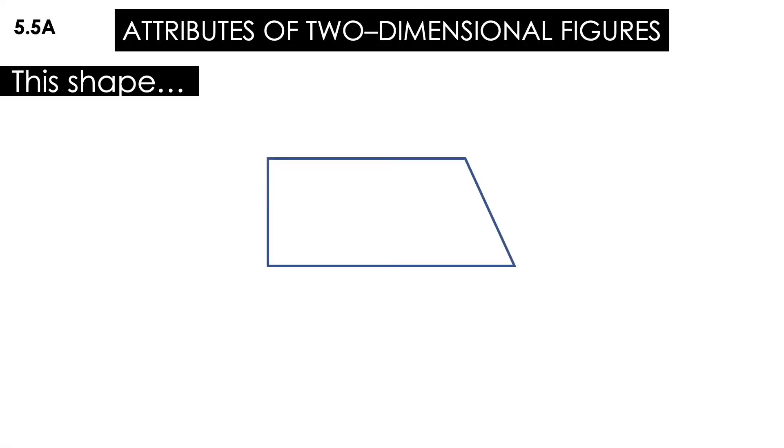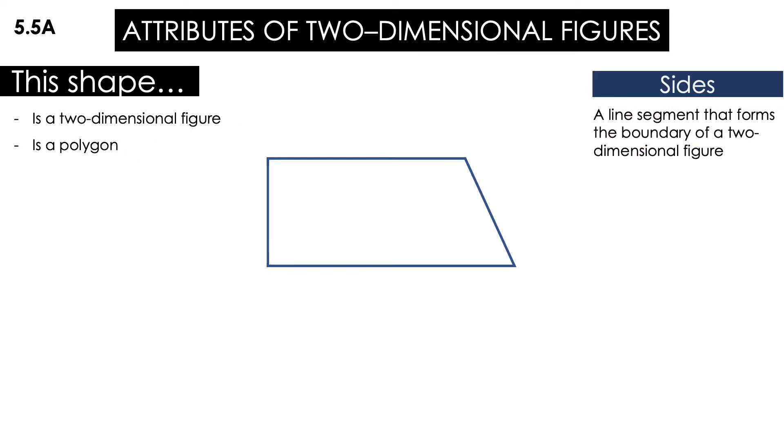Whenever we talk about the attributes, we know that this shape is a two-dimensional figure, it's a polygon. According to the sides that are the line segments that form the boundary of a two-dimensional figure, we have here a side from A to B, and we're going to name it this way with a little line segment on the top. We also have BC, CD, and DA. That means that it has four sides. It's a quadrilateral, right?